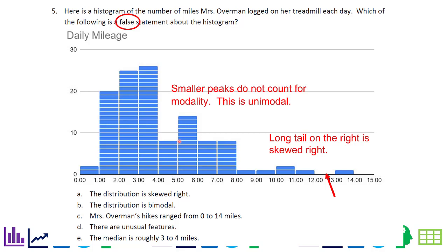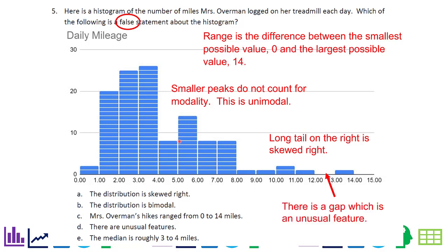Smaller peaks do not count for modality. This is unimodal. Then let's look at our range. My smallest value is zero, my largest was 14. So C looks fine. Are there unusual features? Yeah, look where that arrow is. There's a gap. That's an unusual feature.